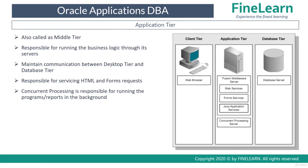The application tier is also called the middle tier. The main purpose of the application tier is to ensure that communication between the desktop tier, that is the client tier, and the database tier is always maintained properly. The actual business logic related to the application runs on the application tier, maintained by servers running on it.